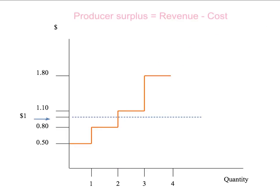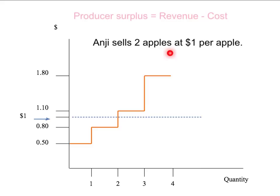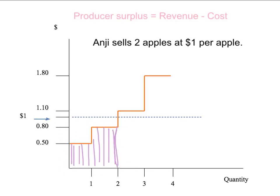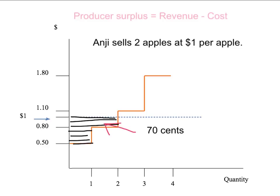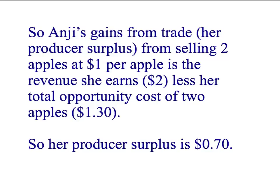We can use Angie's total cost to get her producer surplus or gains from trade — that's just revenue less the total opportunity cost of the units she gives up. Suppose Angie sells two apples at $1 per apple: her revenue is $2, shown as the blue area. The total opportunity cost is the area under her marginal opportunity cost curve up to two apples — the purple area. The producer surplus is the difference between the two, shown as the black shaded area, which equals exactly $0.70.